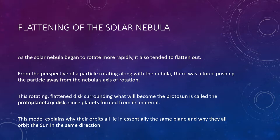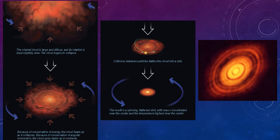But there was no such effect opposing contraction in a direction parallel to the rotational axis—in other words, vertically. So some 100,000 years after it began to contract, the solar nebula developed a structure with a rotating, flattened disk surrounding what would become the protosun. This disk is what we call a protoplanetary disk, since planets formed from its material.